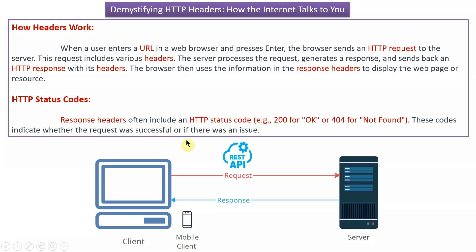The browser then uses the information in the response headers to display the web page or resource. The response headers often include an HTTP status code — 200 for OK or 404 for not found. These codes indicate whether the request was successful or if there was an issue.